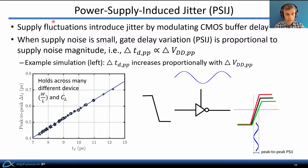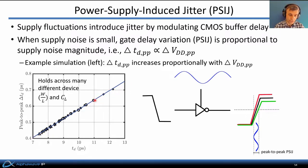Let's focus on power supply induced jitter in CMOS clock distribution networks. Supply fluctuations introduce jitter in a CMOS buffer by modulating the gate delay through the inverter. When the supply noise is small, the gate delay variation (PSIJ) is proportional to the supply noise magnitude: modulating the supply by ΔVdd causes the delay to change by Δt proportional to ΔVdd. This trend is very accurately held across many different device sizes and capacitive loads, as shown in simulation results in a 16 nanometer FinFET technology.